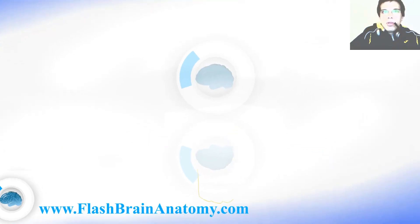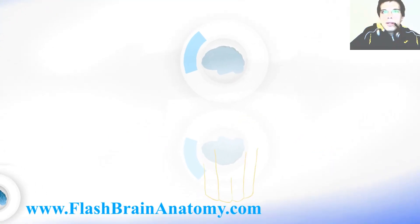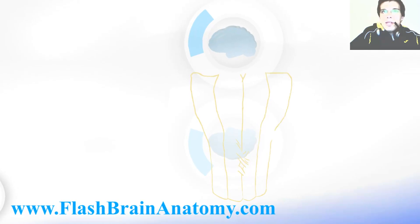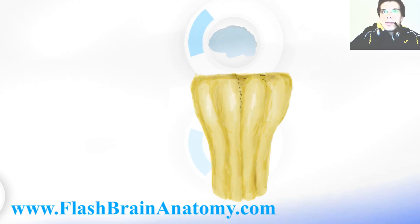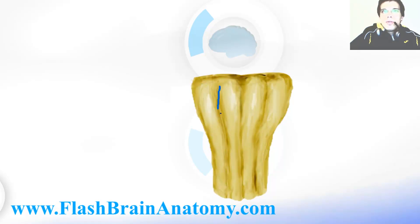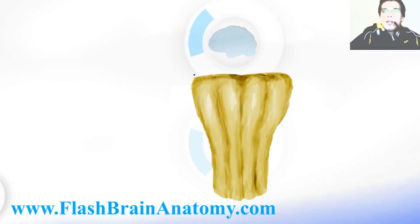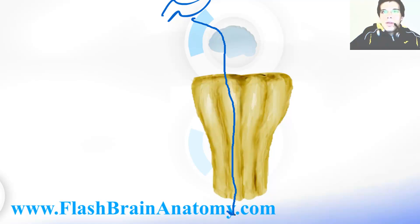First I illustrated the medulla oblongata. It means 'the extended spinal cord' in Latin. These two structures are the pyramids of the medulla oblongata. They are the elevations caused by the corticospinal tract — the tract that goes from the cortex of the brain through the pyramids and down to the spinal cord.